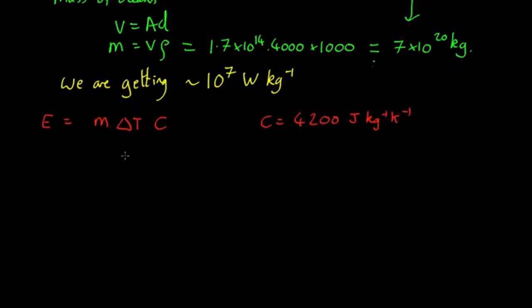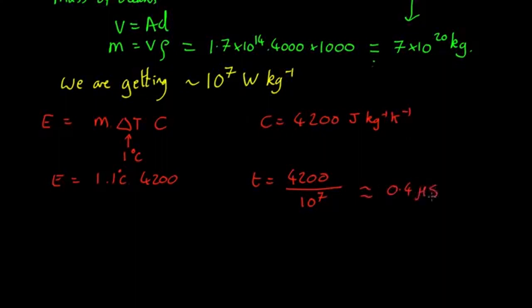How long will it take to warm the world's oceans up by one degree? If ΔT is one degree centigrade, we need an energy of one kilogram times one degree C times 4,200, so we need 4,200 joules. How long does that take? The time equals the energy required divided by the power, which comes out at about 0.4 microseconds, 0.4×10^-6 seconds. The world's oceans are going to heat up very, very fast.